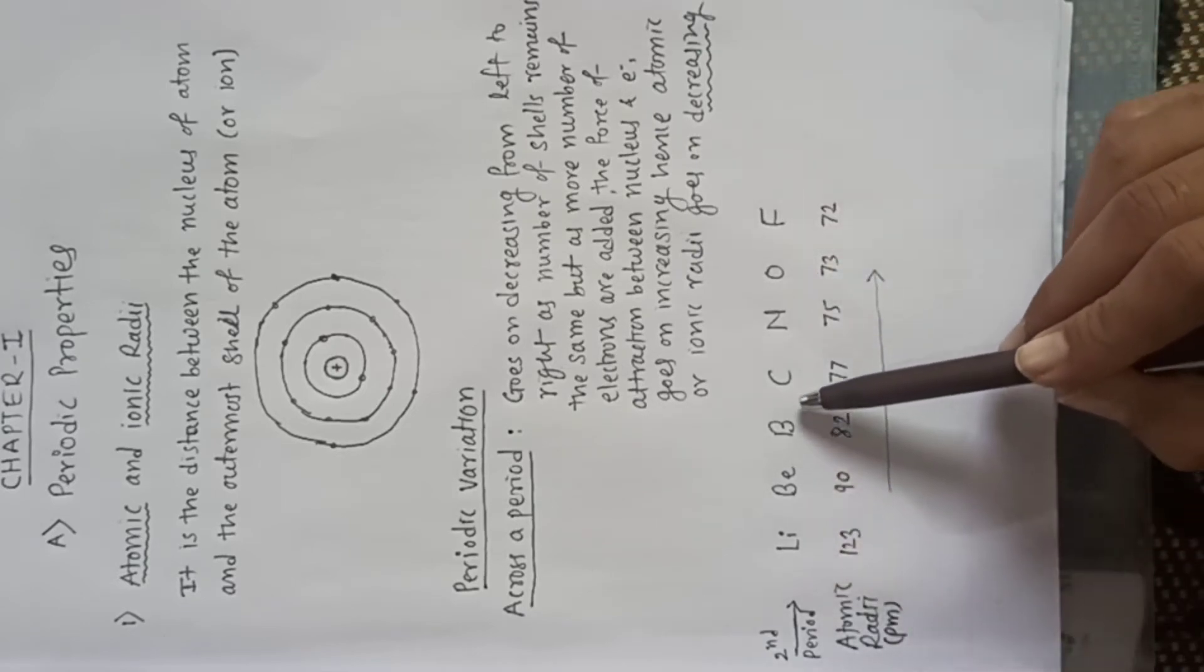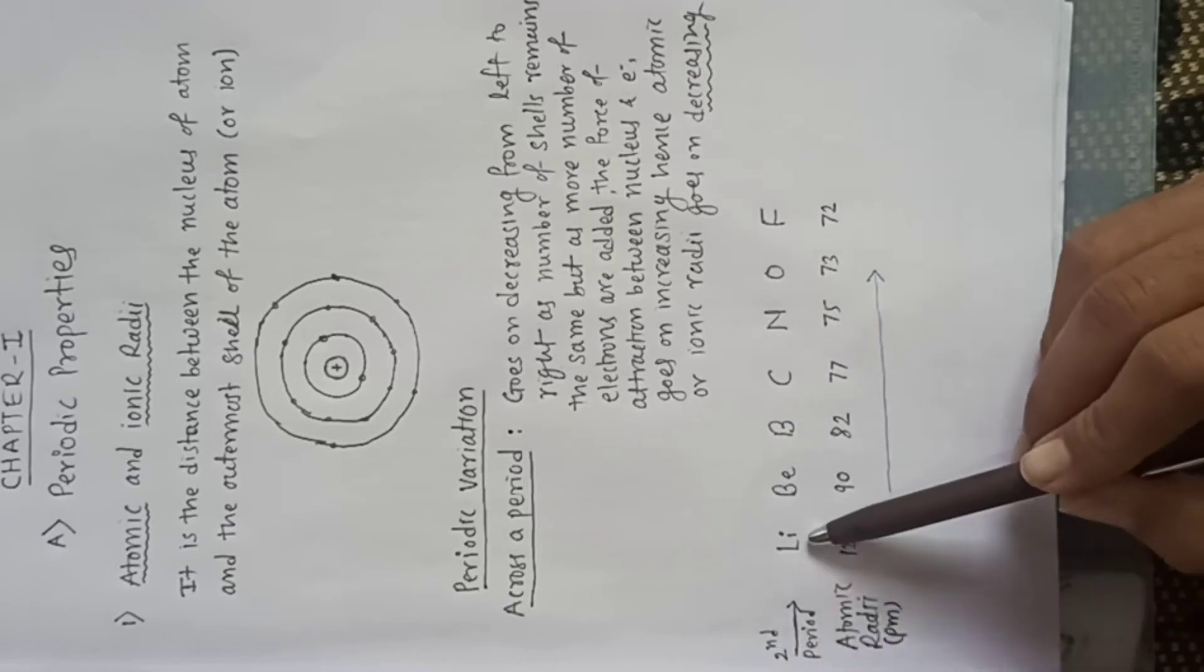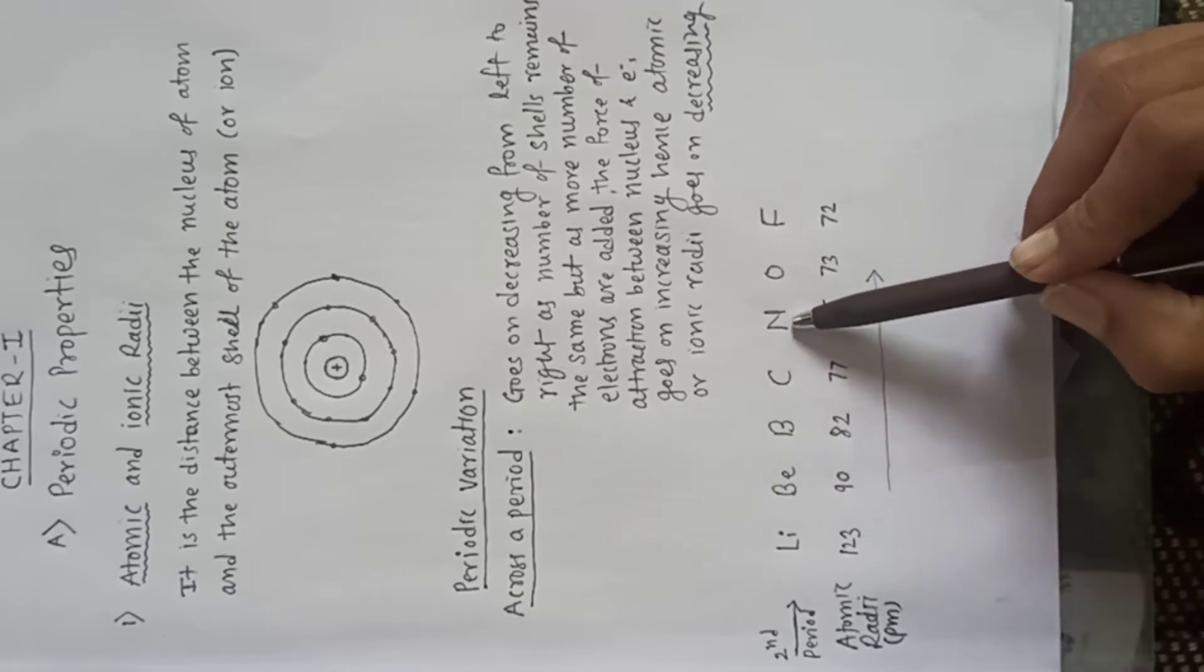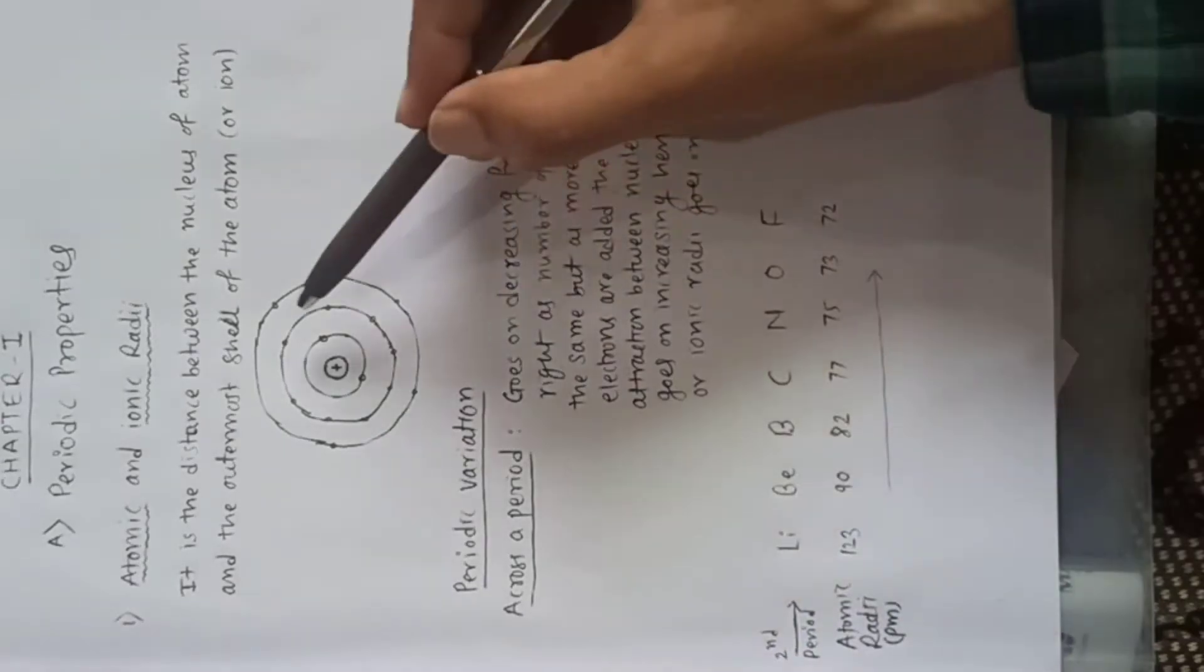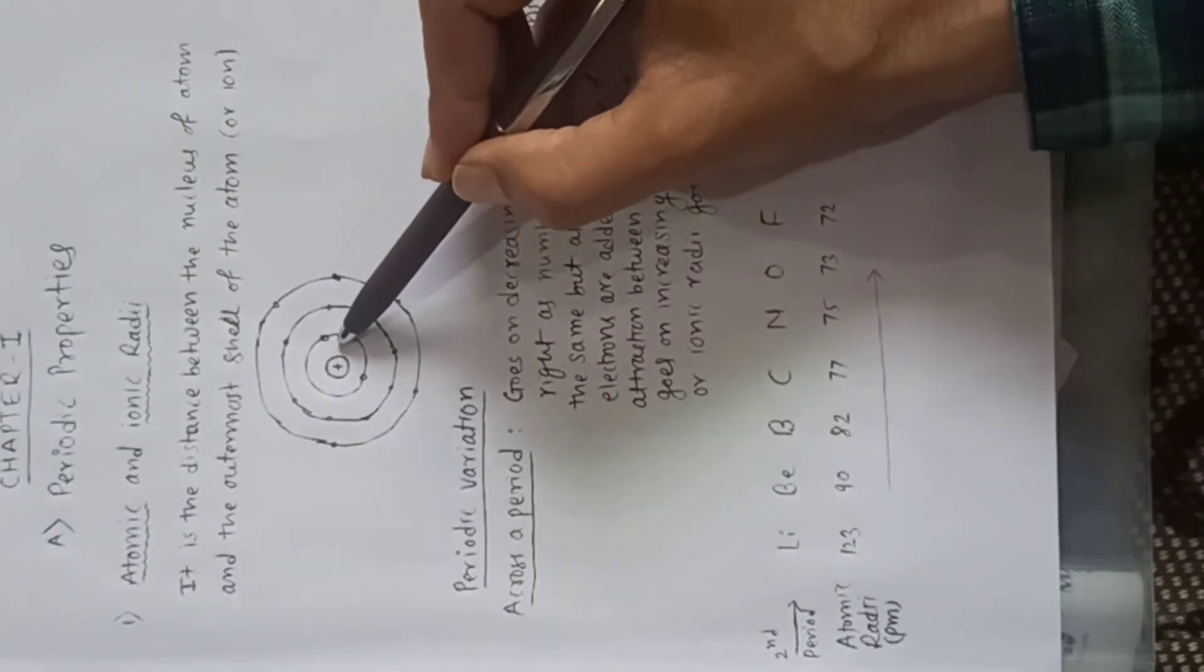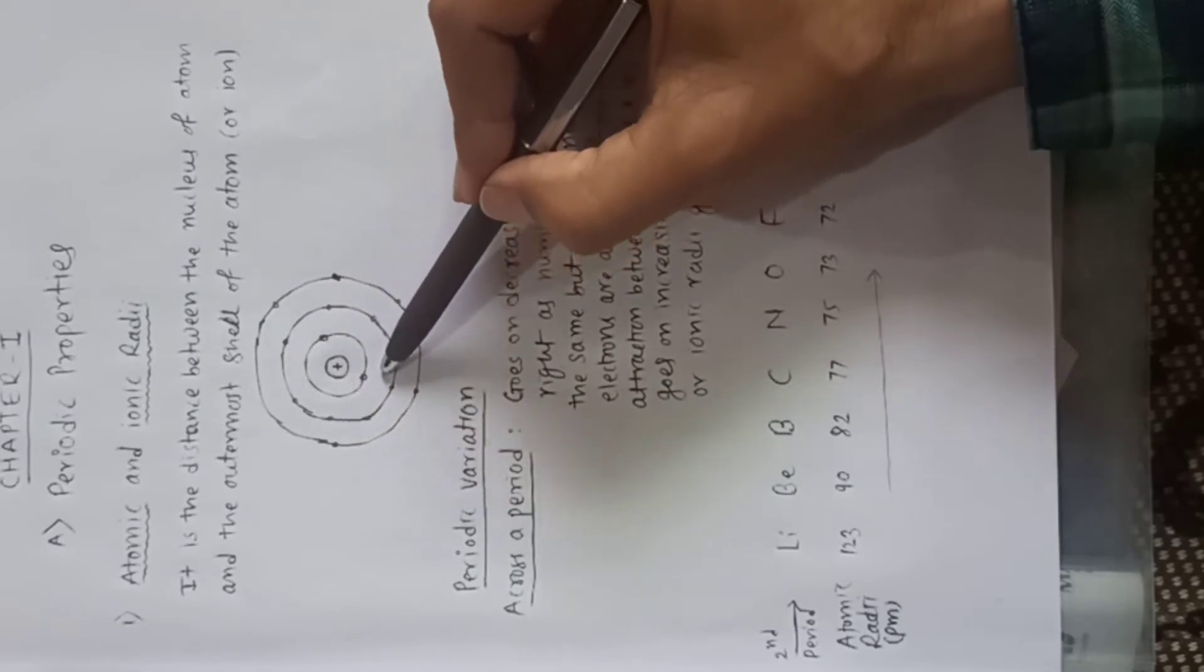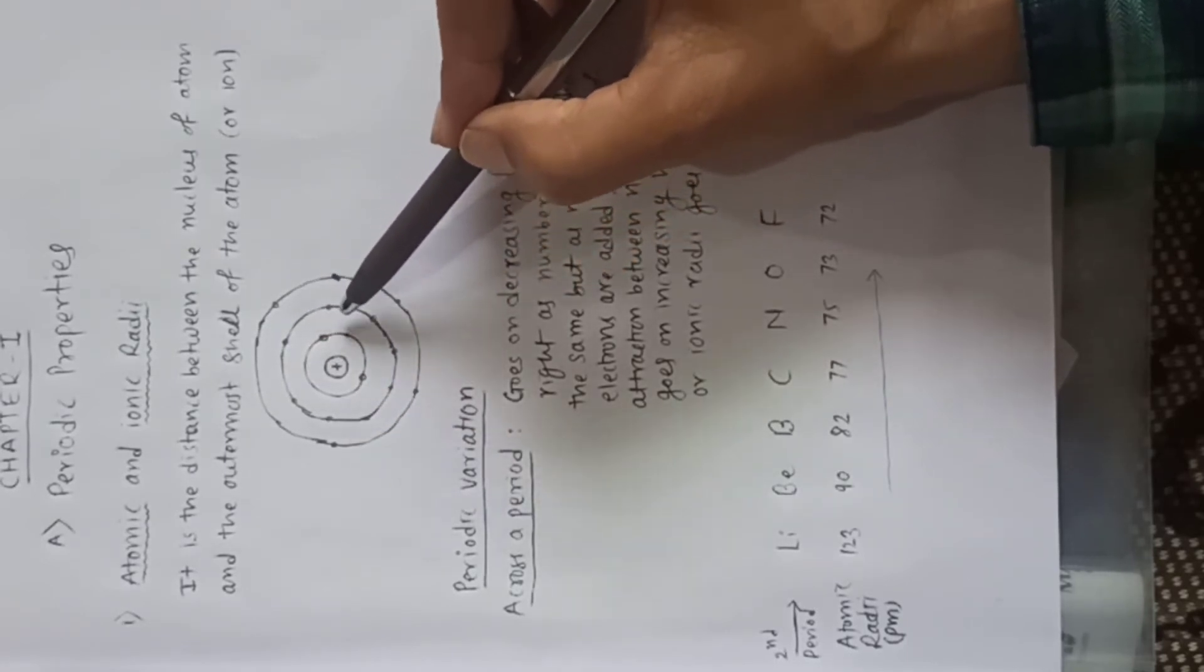The number of main shells remains the same. Consider the second period: lithium, beryllium, boron, carbon, nitrogen, oxygen, and fluorine. As it is the second period, the number of shells is 2. Therefore, the outermost shell will be this one, and new electrons will go on adding in the same shell.